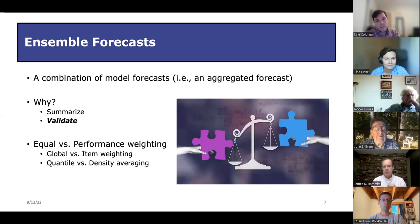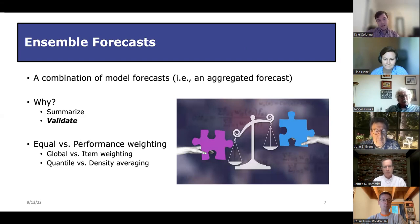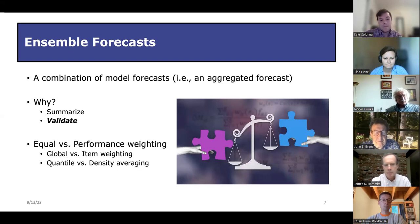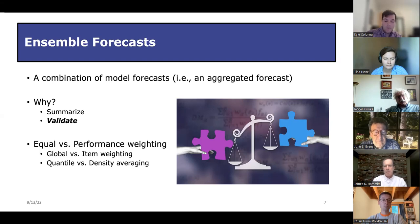There's also the concept of ensemble forecasts — a combination of individual model forecasts aggregated into one summarized forecast. Ensemble forecasts can serve as a method of validation. If you're using performance weighting, you can determine which models to weight more heavily. There are also considerations around global vs. item weighting — if you're familiar with the classical model, you might recognize this. We'll stick with global weighting because it's easier to explain and there wasn't much difference between the two when we made our own performance-weighted ensemble with the classical model.